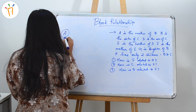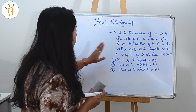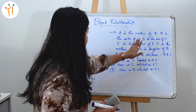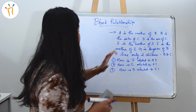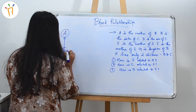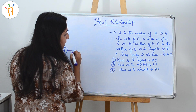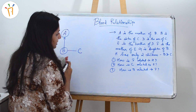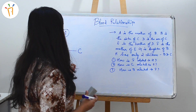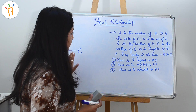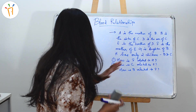B is the sister of C — since B is said to be the sister, B is female. B and C are siblings, so we write C here, but the gender of C is not specified, so we'll keep it as it is. Next: D is the son of C. So we write D below C, and since D is the son, D is male — we'll denote it with a square.